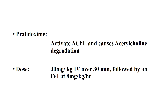Summary: pralidoxime activates the acetylcholinesterase enzyme and causes acetylcholine degradation. The dose of pralidoxime is 30 mg per kg intravenous over 30 minutes, followed by an intravenous infusion at 8 mg per kg per hour.